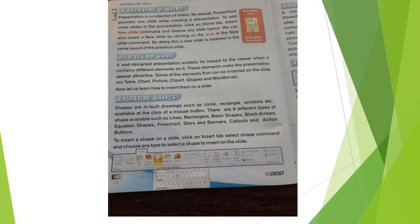Inserting shapes: shapes are drawings such as circles, rectangles, symbols, etc., available at the click of a mouse button. There are nine different types of shapes: lines, rectangles, basic shapes, block arrows, equation shapes, flowchart, stars, banners, callouts, and action buttons. To insert a shape, click on the Insert tab, select the shape command, and choose the type of shape. Clicking the down arrow in shapes shows the different types available.